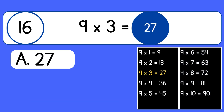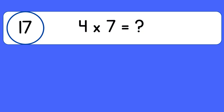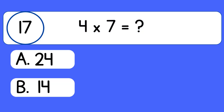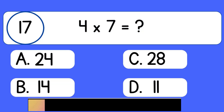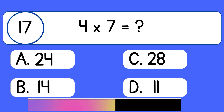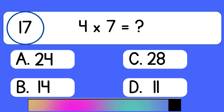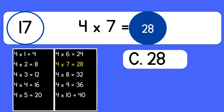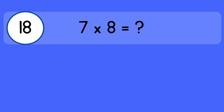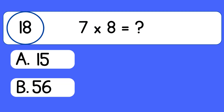Nine times three equals twenty-seven. Four times seven. Four times seven equals twenty-eight. Seven times eight.